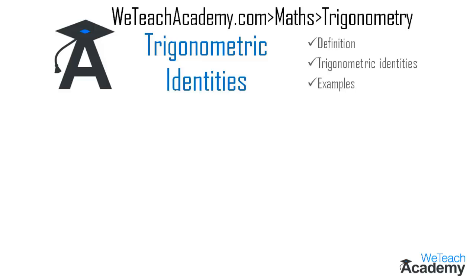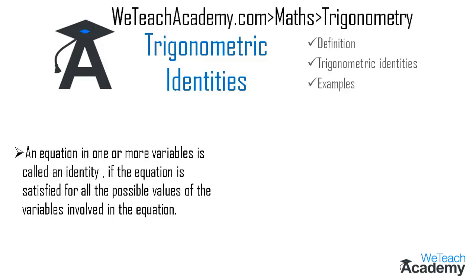Coming to the first section, an equation in one or more variables is called an identity if the equation is satisfied for all possible values of the variables involved. For example, (a + b)² = a² + 2ab + b² is an algebraic identity held for all a, b belonging to R.